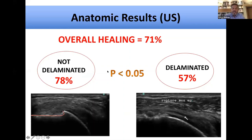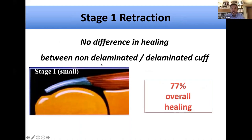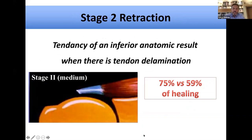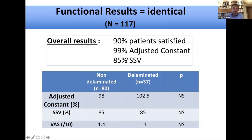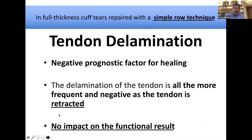In small tears there was no difference in healing between delaminated and non-delaminated groups. In medium tears there was a slight difference, but not statistically significant. In large tears it was truly statistically significant: 83% healing versus 48% when the cuff was delaminated. Patients were satisfied in 95% of cases with a very good constant score, and delamination had no impact on the functional result. However, delamination was confirmed as a negative prognostic factor for healing in simple single-row repair, and was worse with more retraction.